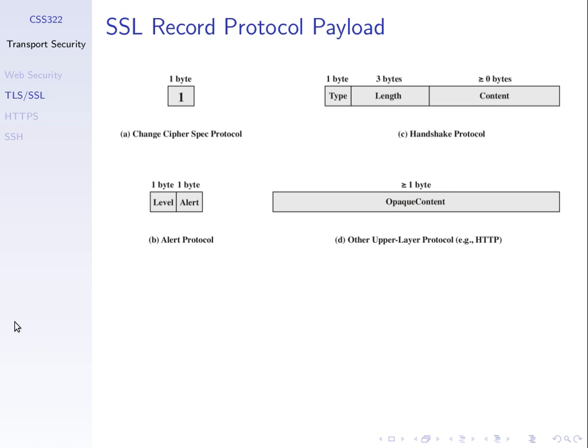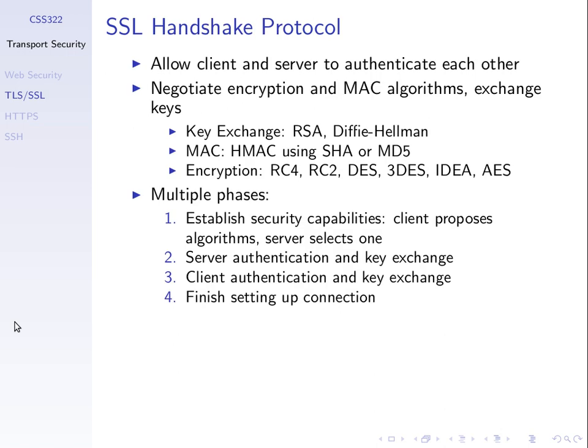We're not going to go through the structures of those other packets in detail. We saw some of them in the Wireshark capture. We don't care about the exact structure in this course, just the intended purpose of those messages. When we set up a TCP connection — SYN, SYN-ACK, ACK — then we do an SSL handshake to allow the client and server to authenticate each other and negotiate some parameters.